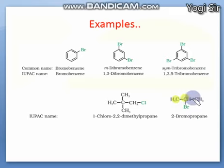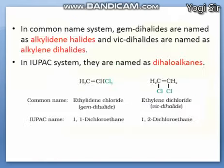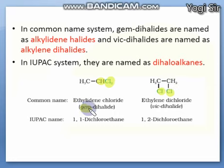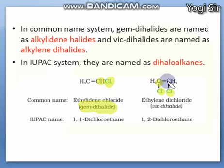Similarly, a three-carbon chain with bromine on the second carbon is named 2-bromopropane. Next is the nomenclature system for dihalides. Dihalides where the halogens are on the same carbon are called geminal dihalides, and if the halogens are on two different adjacent carbons they are called vicinal dihalides — in short, geminal and vicinal dihalides.